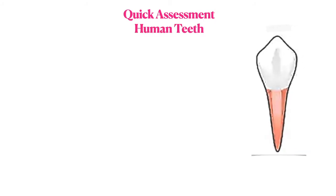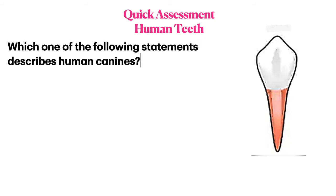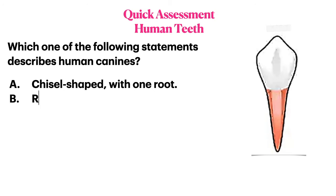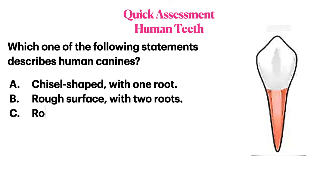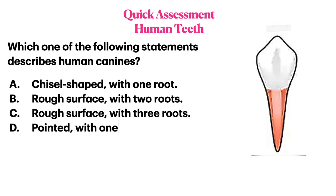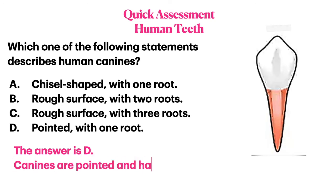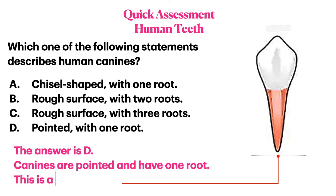Which one of the following statements describes human canines? They are chisel shaped with one root; they have a rough surface with two roots; they have a rough surface with three roots; or they are pointed with one root. The answer is D — canines are pointed and they have one root. This is a canine tooth.